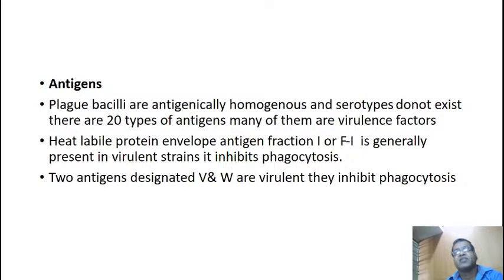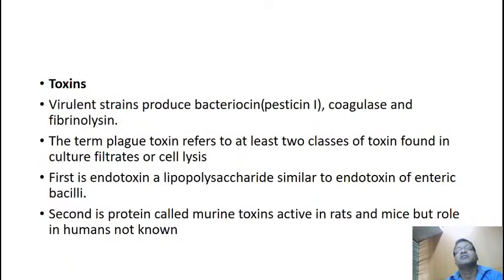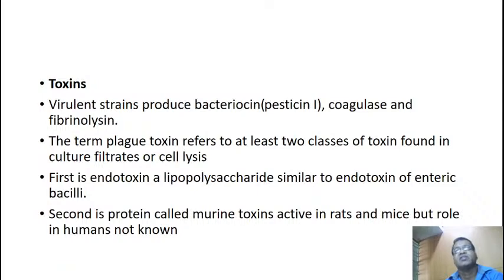Two antigens designated V and W are virulence factors; they inhibit phagocytosis. Coming to toxins: virulent strains produce bacteriocin (pesticin 1), coagulase and fibrinolysin. Bacteriocins are substances which prevent the growth of other bacteria. The term plague toxin refers to at least two classes of toxin: first is endotoxin, a lipopolysaccharide similar to endotoxin of enteric bacilli; second is a protein called murine toxin, which is active in rats and mice but its role in humans is not known.